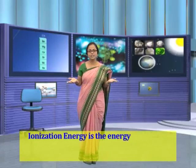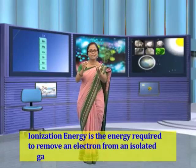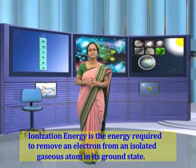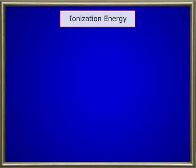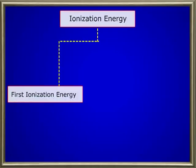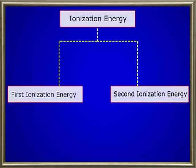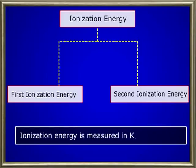Now let's look at the ionization energy of all these alkaline earth metals. Ionization energy is the energy required to remove an electron from an isolated gaseous atom in its ground state. There are actually two levels of ionization energy in each element: first ionization energy and second ionization energy. Ionization energy is measured in kilojoules per mole. The ionization energy decreases as you move down from beryllium to radium.